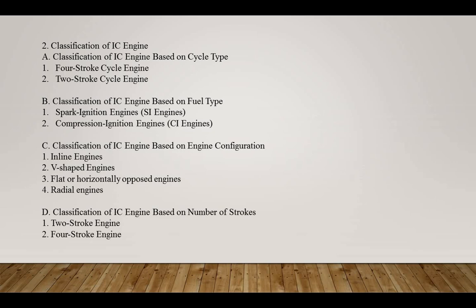The two-stroke engine completes one power cycle in two strokes of the piston — one upward stroke and one downward stroke. The upward stroke compresses the air-fuel mixture in the cylinder, while the downward stroke produces power. These engines are simpler and lighter than four-stroke engines, but they are less fuel efficient and more polluting.